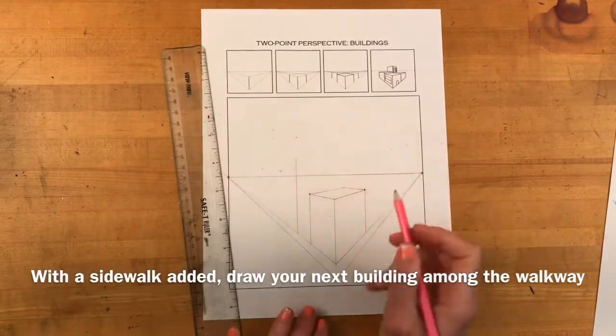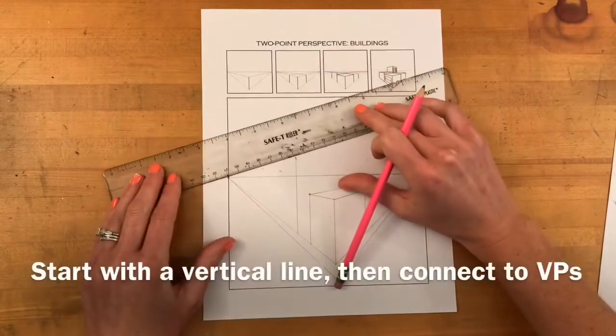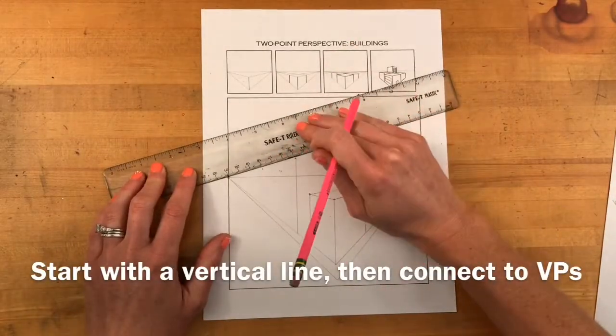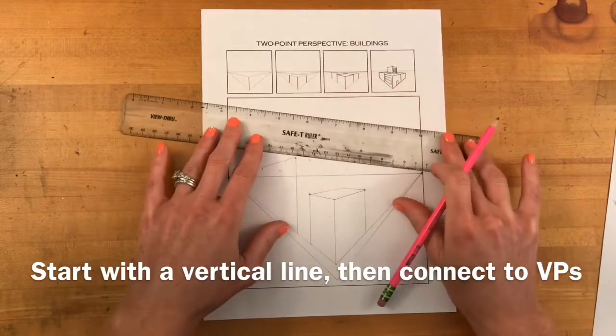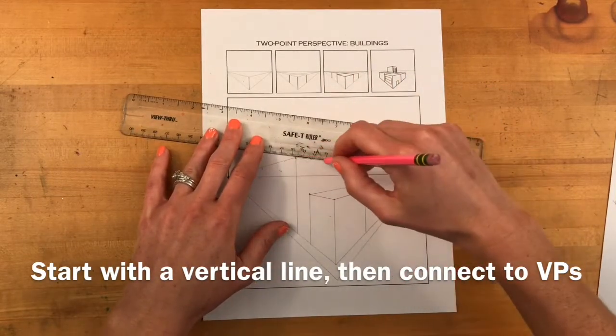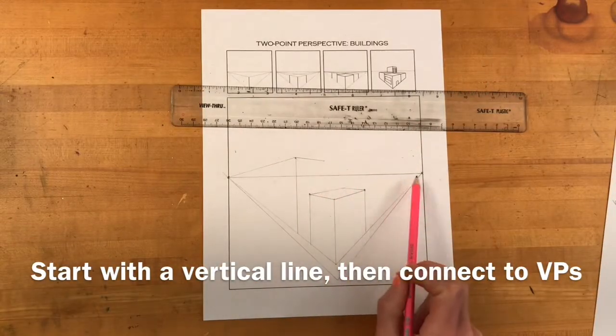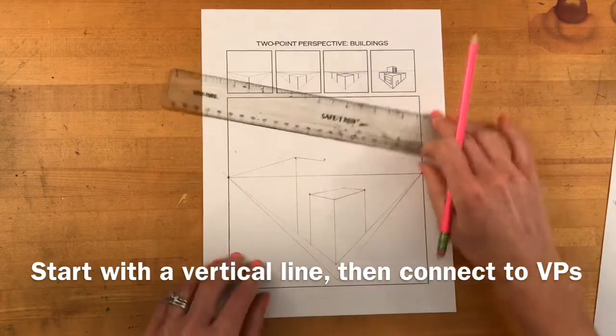And now you're going to start your next building and it's going to be along the same street that you've already drawn. So I started with a vertical line and now I'm connecting the top of the line to both vanishing points. You're going to want to connect the bottom of the line to both vanishing points too.